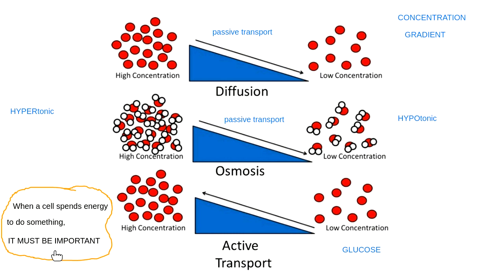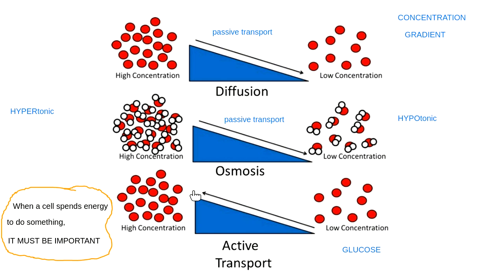When a cell spends energy to do something, it must be important. Active transport requires energy because we're going from a place where there's not very much to a place where there's already a bunch — we're going uphill. We're pushing things up the hill; that's why it takes energy. We're going uphill instead of downhill, and that is why it is active transport.